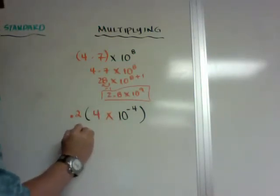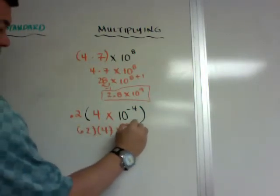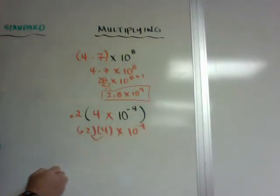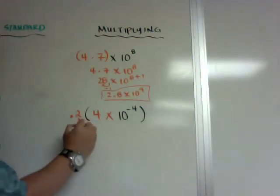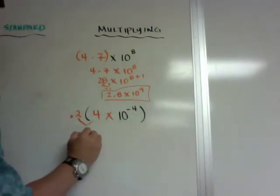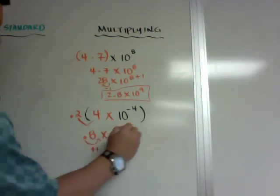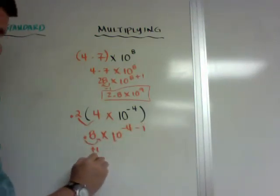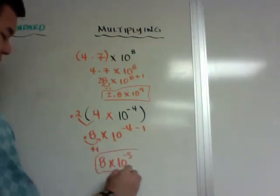So this one, I'm going to go 0.2 times 4 times 10 to the negative 4th power. I'm going to do this first. I'm just going to do this first. I'm going to get 0.8 times 10 to the negative 4th. I'm going to go this way, which is a plus 1, so I need to minus 1. So I get 8 times 10 to the negative 5th power.